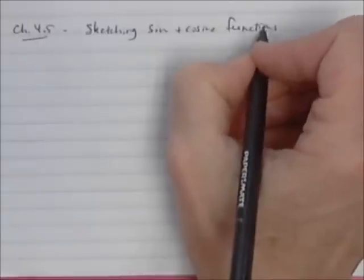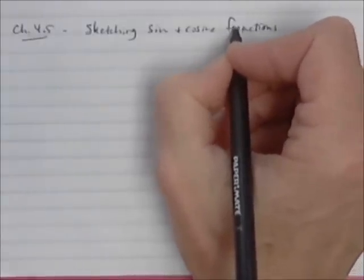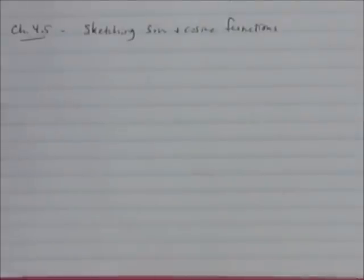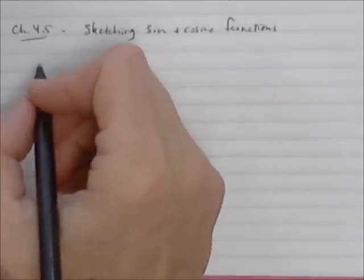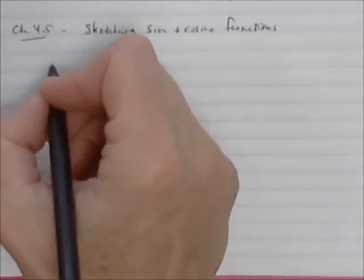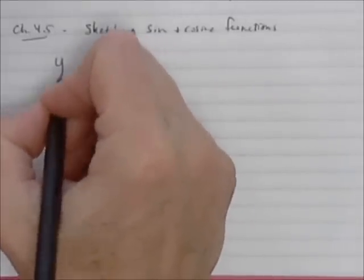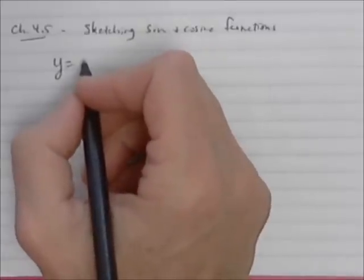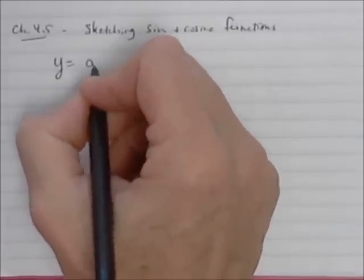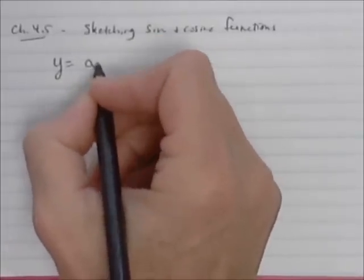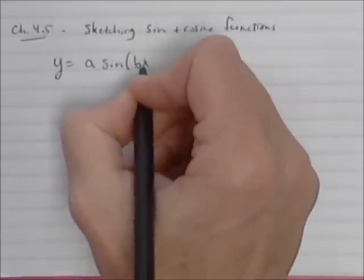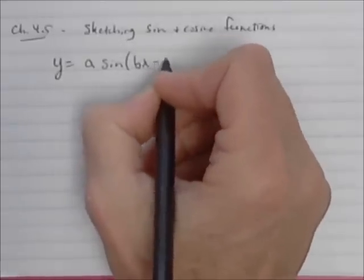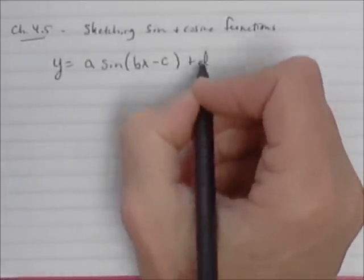You did this last year. The ones that we're going to do this year are a little bit more complicated, and you won't be able to use a graphing calculator when you graph these. The general form of a sine function is y is equal to a times the sine of bx minus c, plus d.